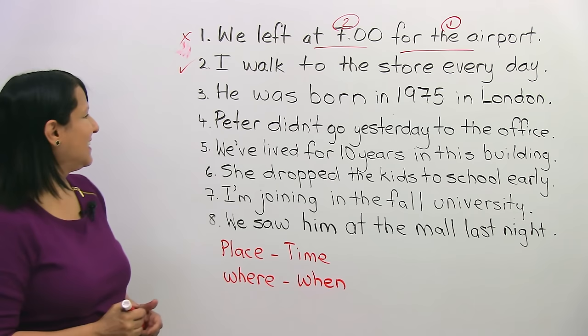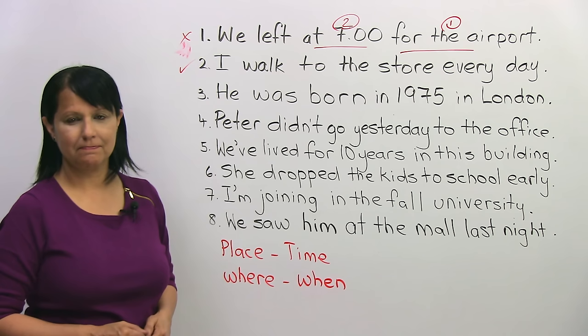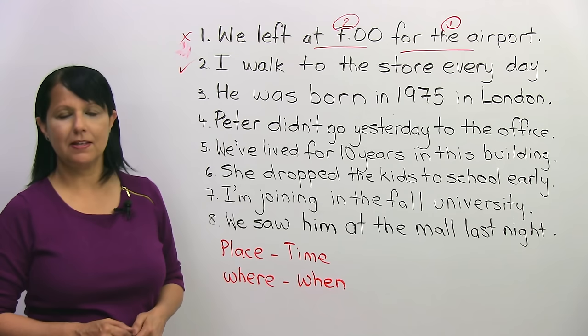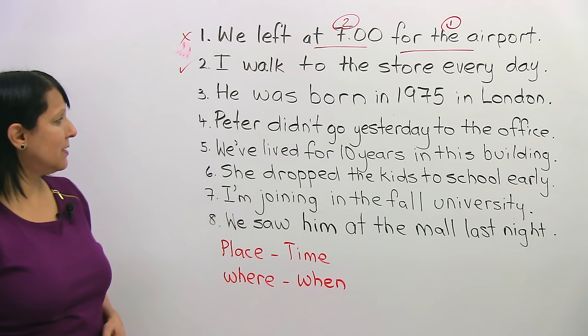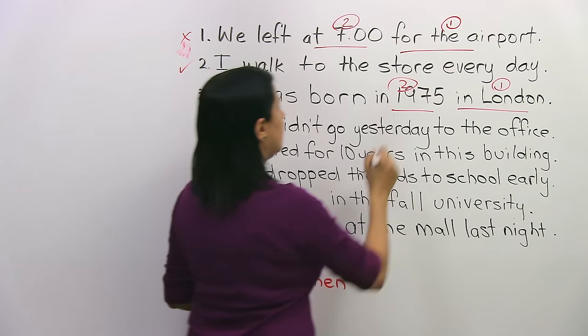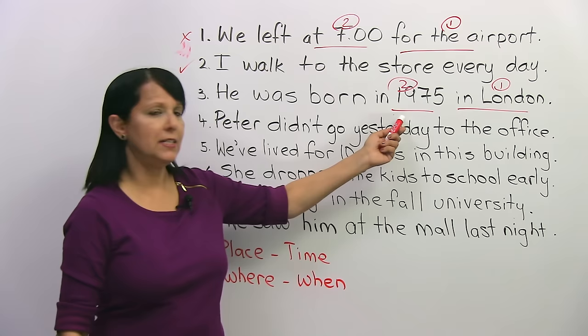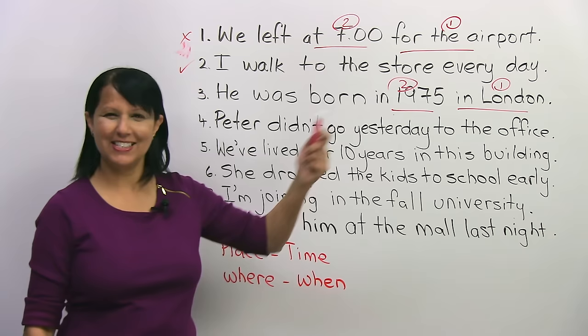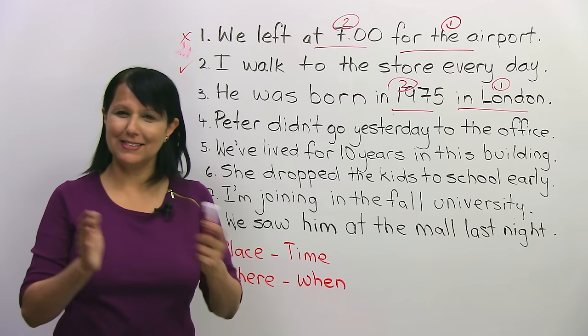Number three: 'He was born in 1975 in London.' Is that right or wrong? He was born where? We have the time first — 1975 — so that's not right. We should say: 'He was born in London in 1975.' He was born where? In London. When? In 1975. Place, then time.